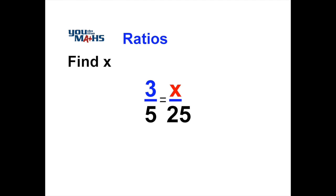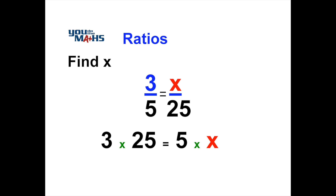Whenever you've got two fractions equal to each other, the way to solve them is to cross multiply. So what we do is we take the 25 from the denominator of the right hand side and multiply it across with the 3, and then the 5, which is the denominator of the left hand side, we multiply across to the x. That's called cross multiplication of fractions.